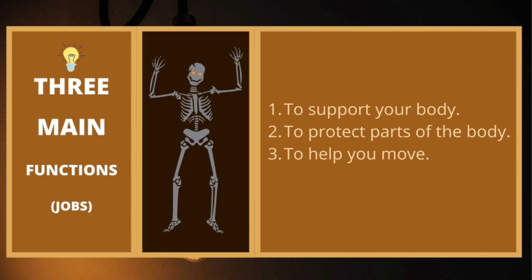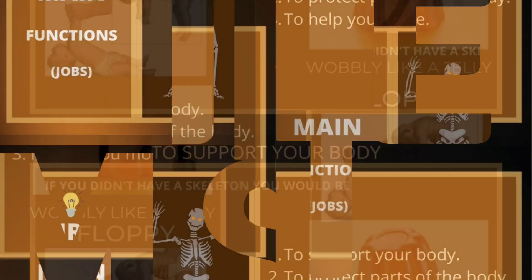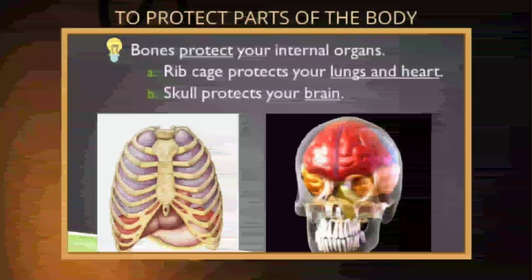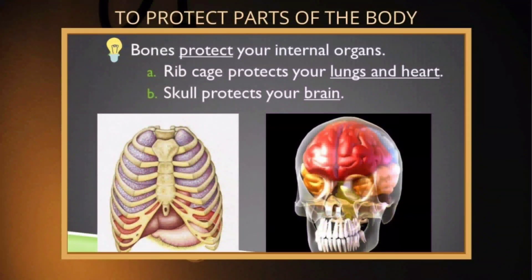Let's discuss more about the functions. To support your body means if you didn't have a skeleton, you would be floppy and wobbly like a jelly. What about to protect parts of the body? You know that bones protect your internal organs? Just like the rib cage protects your lungs and heart, and the skull protects your brain.